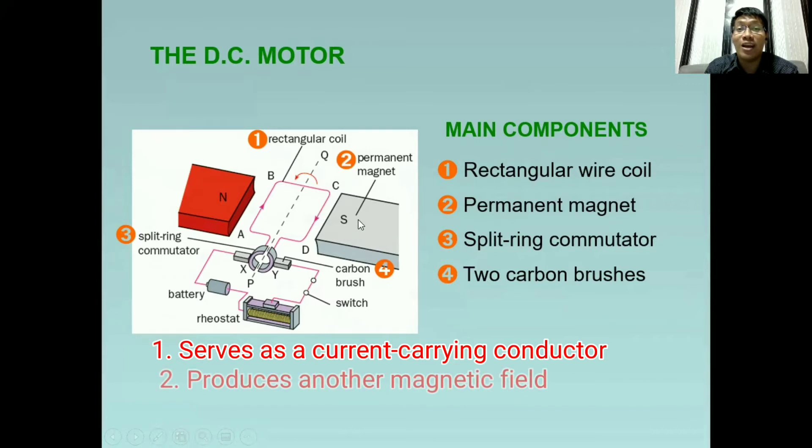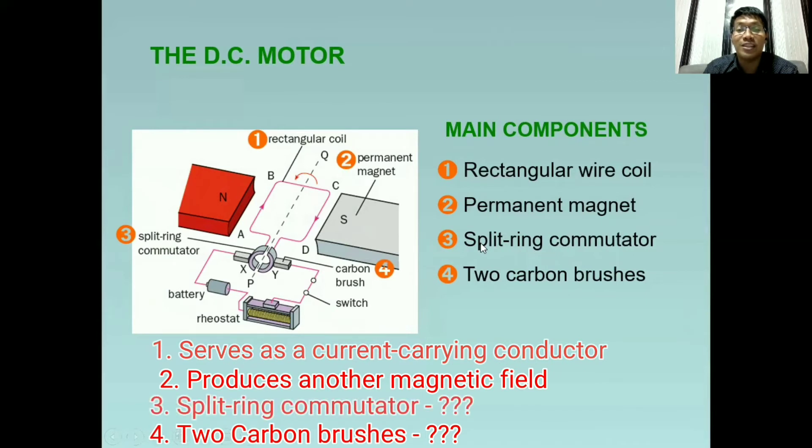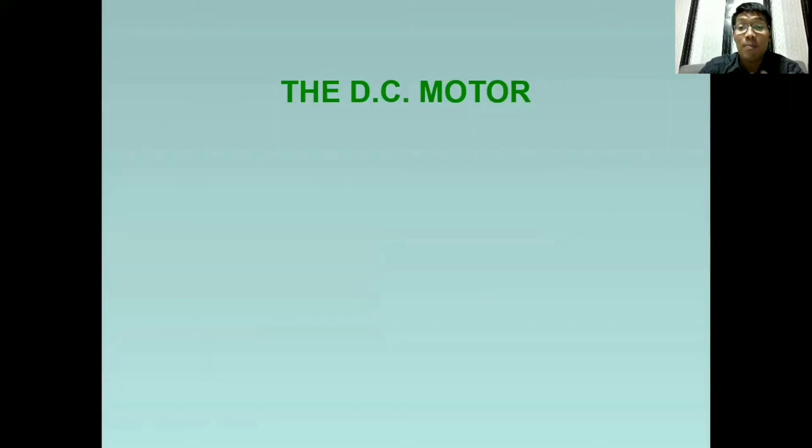Number two, the permanent magnet. So alam natin na ang magnet ay may natural magnetic field. So mag-i-interact yung dalawang magnetic field. Ano naman ang function ni split ring commutator at ni two carbon brushes?